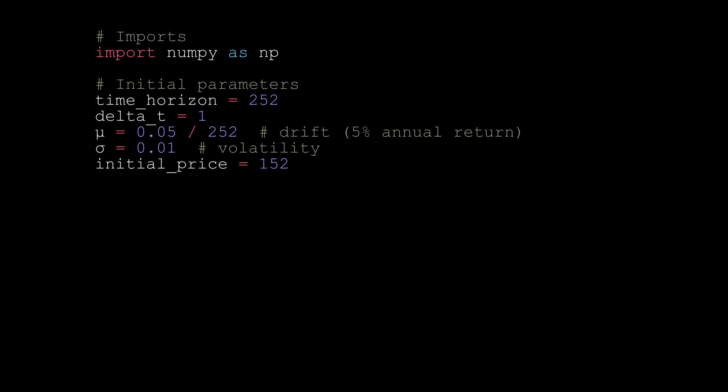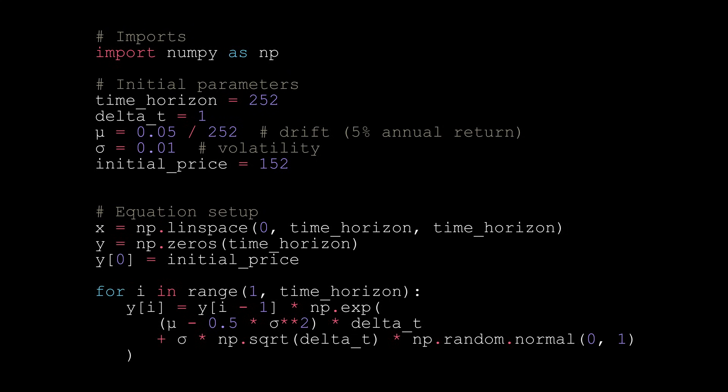Now that we set up our initial parameters, we can move on to our simulation. We set our x-axis values to range from 0 to 252, and our y values to initially be all zeros. Then, we set the initial value of the y data, which will be our price data, to our initial price of 152.